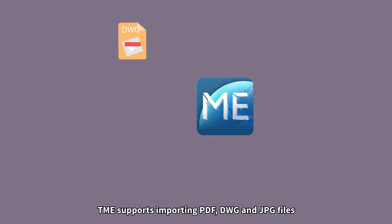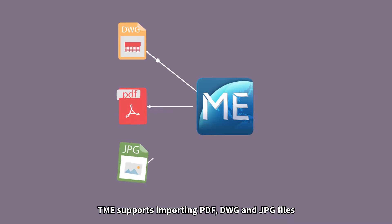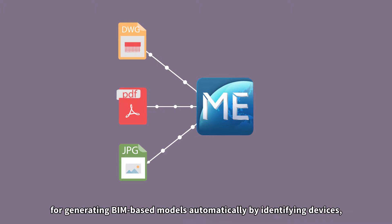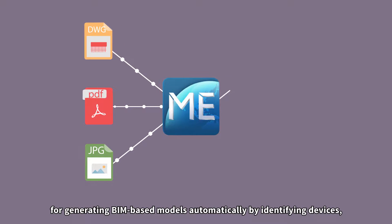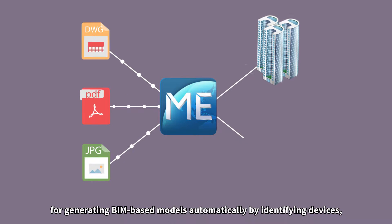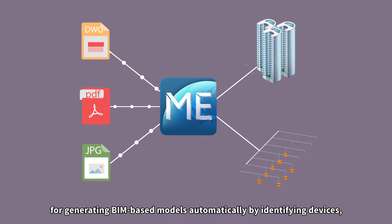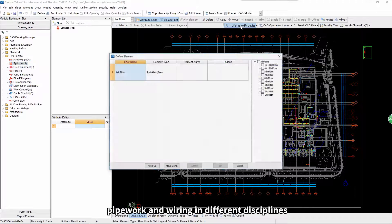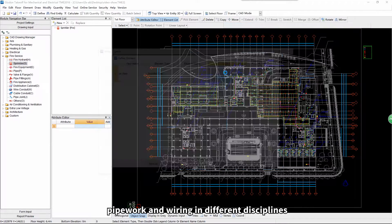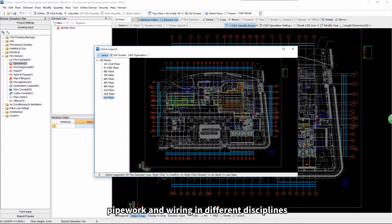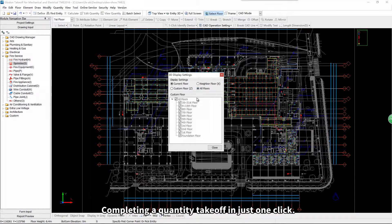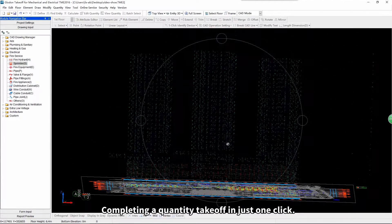TME supports importing PDF, DWG, and JPG files for generating BIM-based models automatically by identifying devices, pipework and wiring in different disciplines, completing a quantity takeoff in just one click.